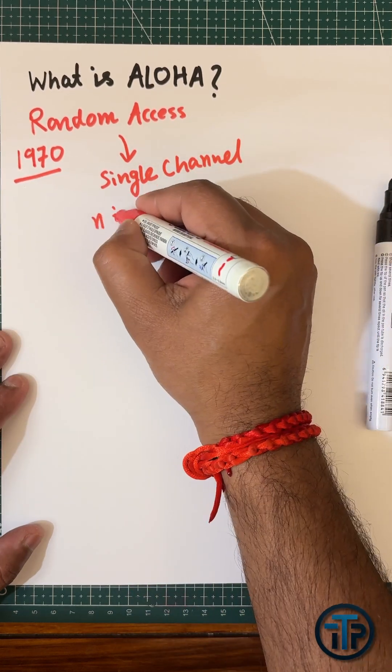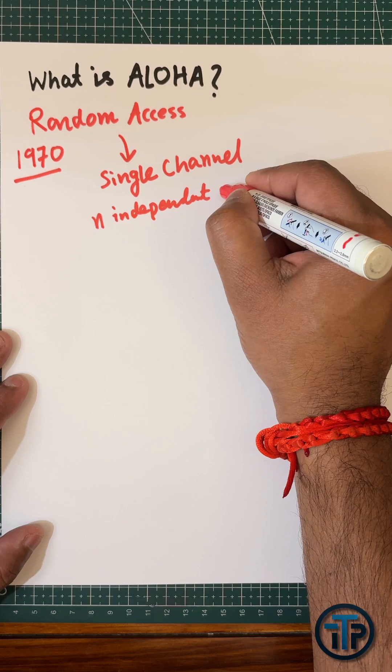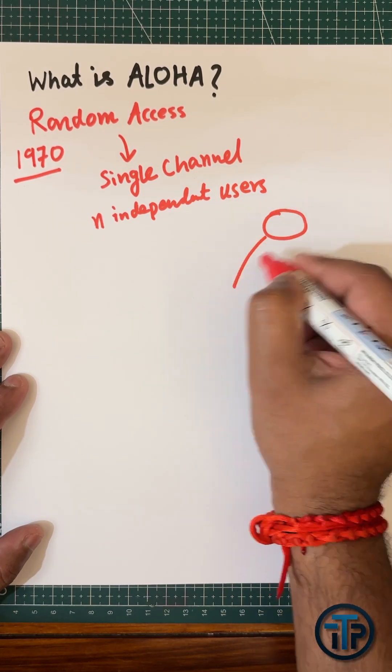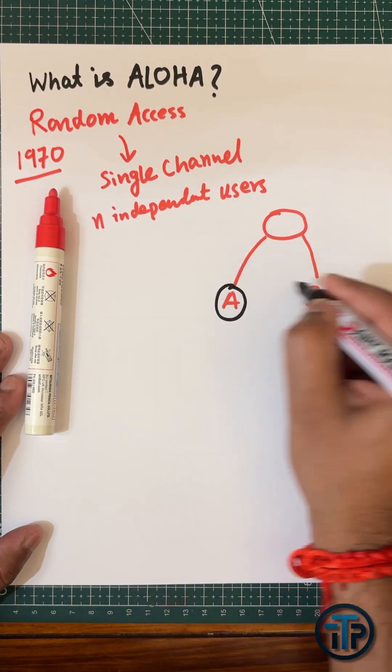random access? For example, there are N number of independent users. Independent users means they don't have any control over each other, they can transmit anytime, and they have to share a single channel.